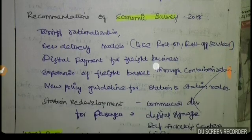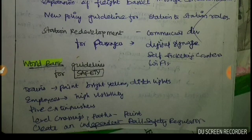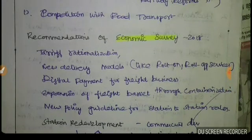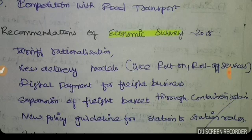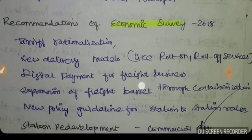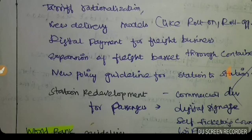Solutions drawn from the Economic Survey 2018, World Bank Reports, and various committees include: Tariff Rationalization — fares based on distance for different classes such as third AC, to make fares sustainable long-term. New Delivery Models including Roll-on/Roll-off services, Digital Payment, Containerization, Expansion of freight basket, and Bulk Transport modernization.